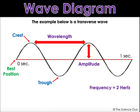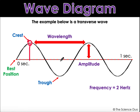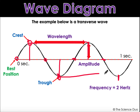Here's a diagram of a transverse wave. We have the crest — the highest part it has traveled — and the trough, which is the lowest part it has traveled. This part is called the resting position — anytime the wave gets here, it's at resting position. This is the amplitude. And from two corresponding points — for example, crest to crest — is the wavelength. We could also measure trough to trough, which is also a wavelength.